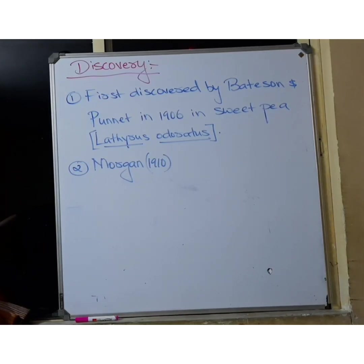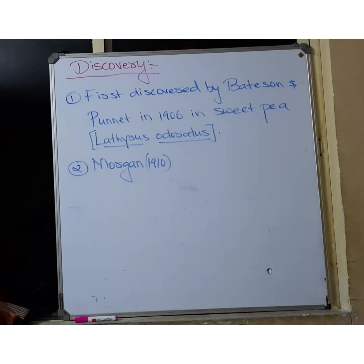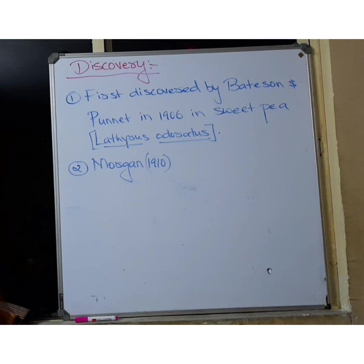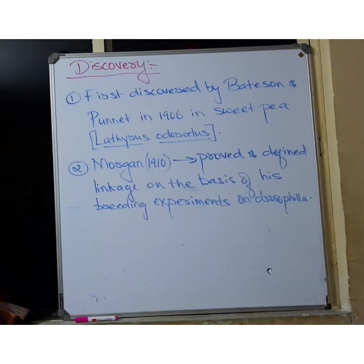Regarding the discovery of linkage: the first discovery was made by Bateson and Punnet in 1906 in sweet pea plant (Lathyrus odoratus). However, Bateson and Punnet had no experimental proof of linkage. In science, when we discover something new, experimental proof is essential. The first experimental proof of linkage was given by Thomas Hunt Morgan in the year 1910. Morgan conducted many breeding experiments on Drosophila and on the basis of these breeding experiments proved linkage experimentally and also gave us its definition.